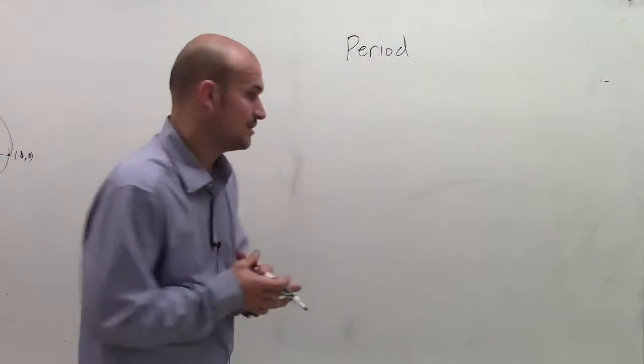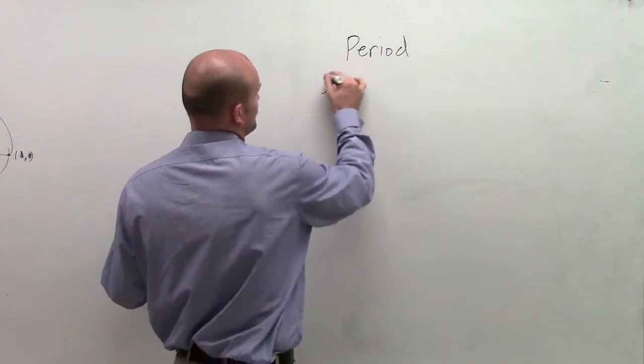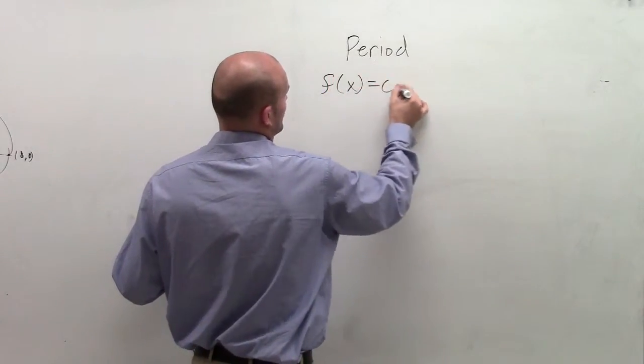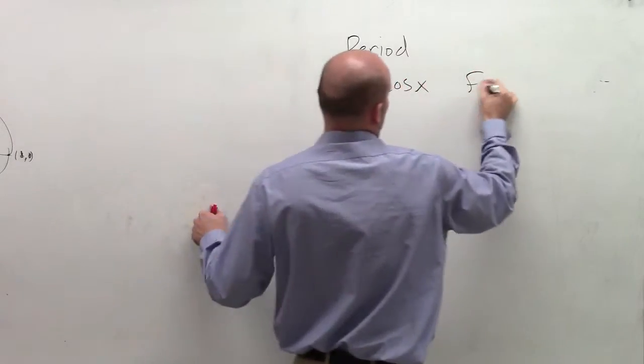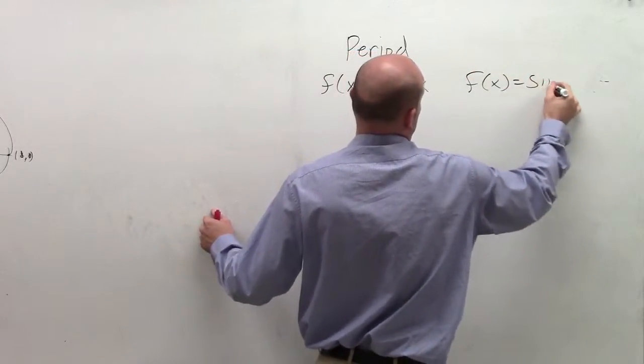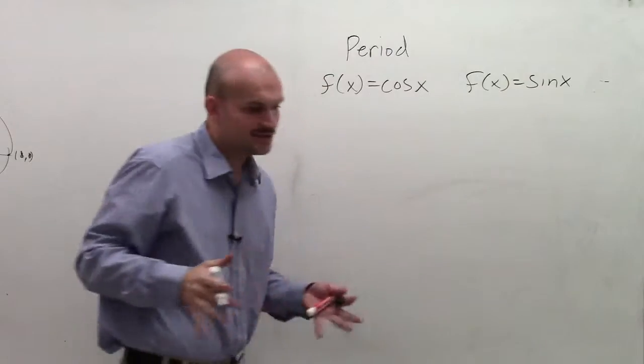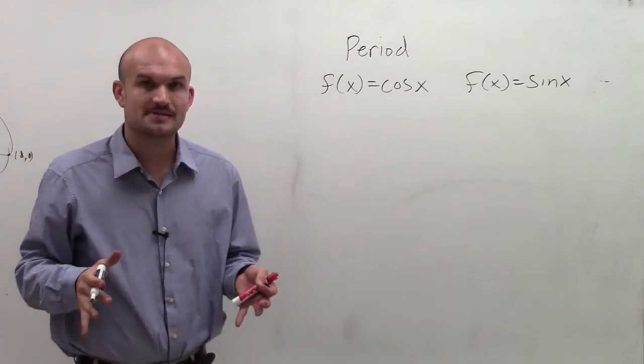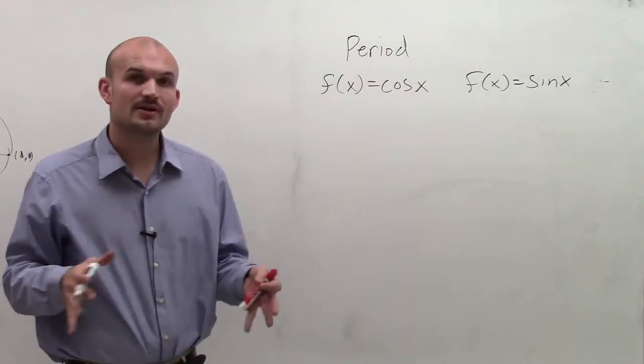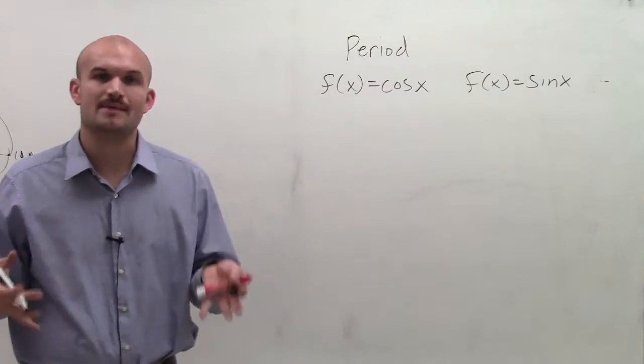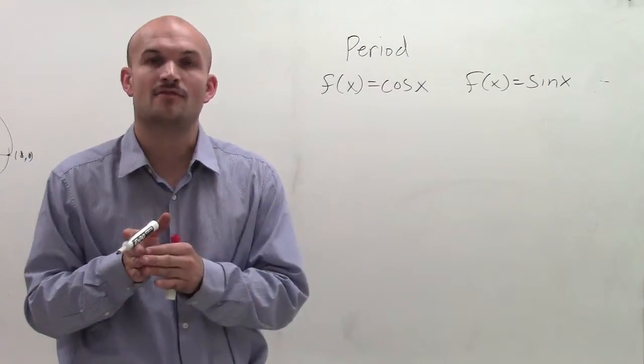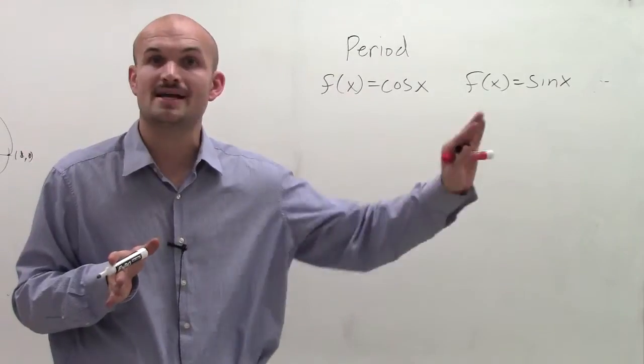So now let's talk about the period of a function. So far we've talked about two functions: f of x equals cosine of x and f of x equals sine of x. When dealing with these two functions, the period was always 2 pi.